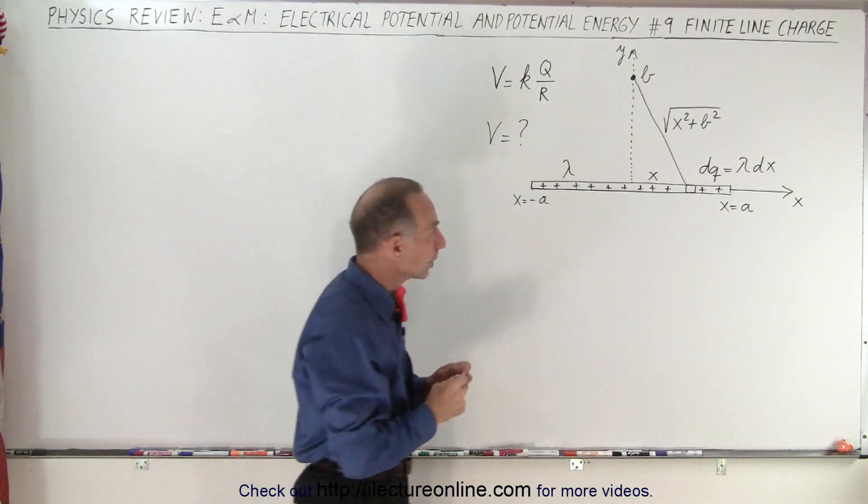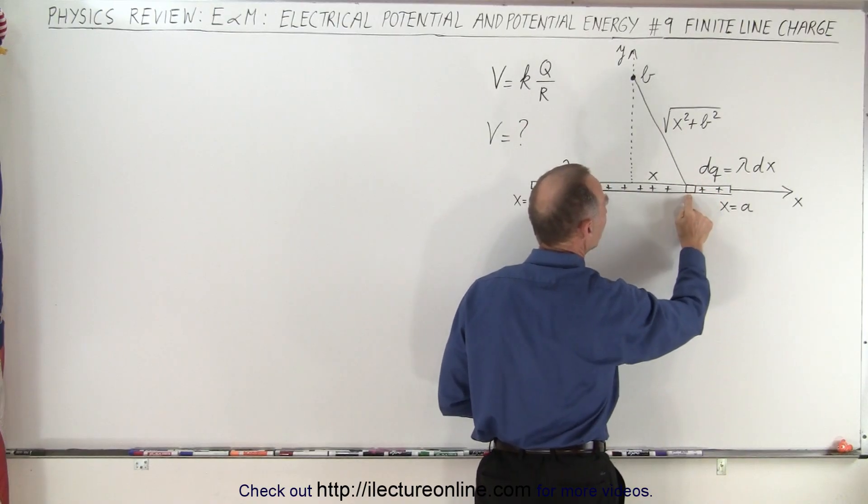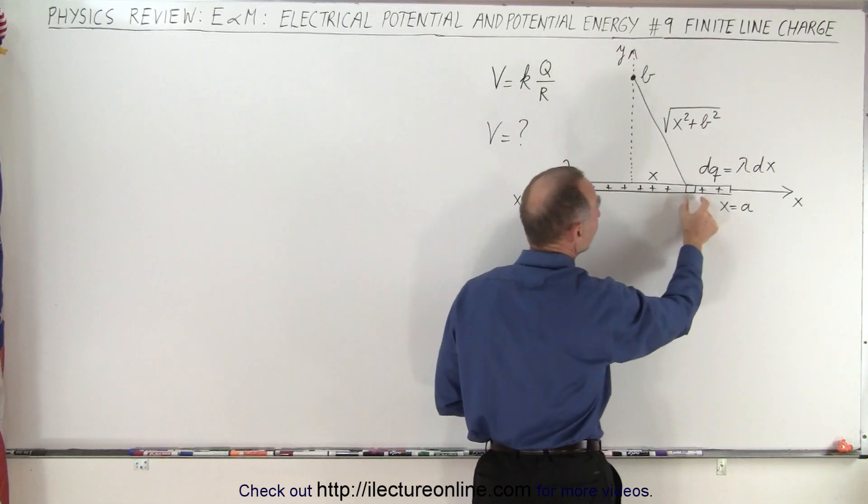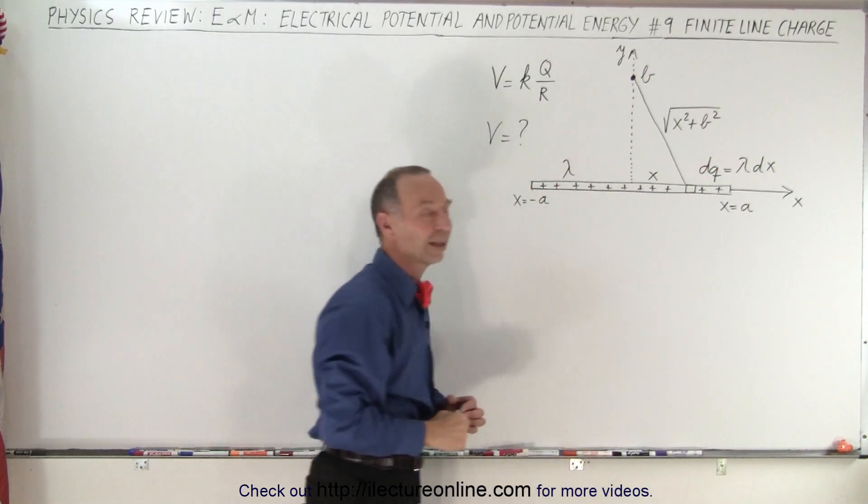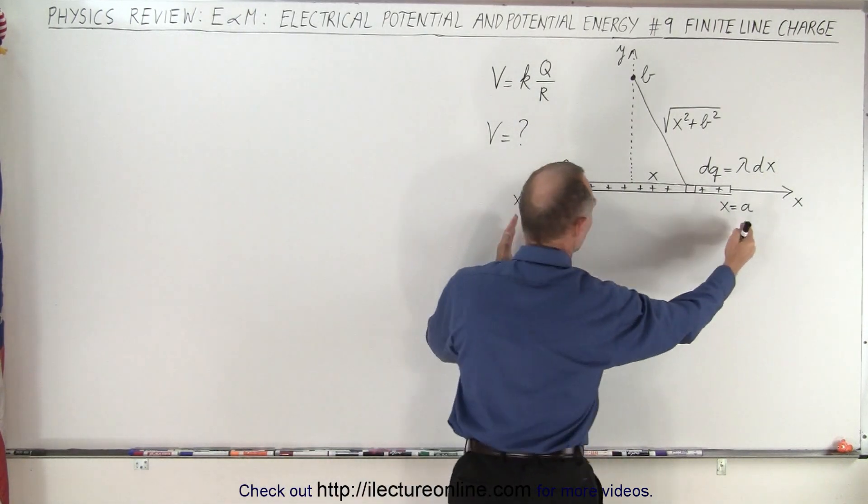And so then what we do is we take a small little piece of that and it has a small amount of charge dq, and dq would be equal to the linear charge density times the length of that little segment which is dx. So we can define dq as lambda times dx. Notice the length of this line is 2a.